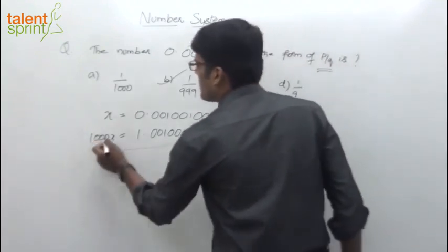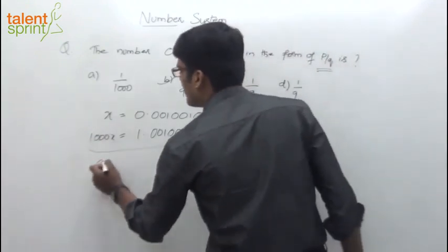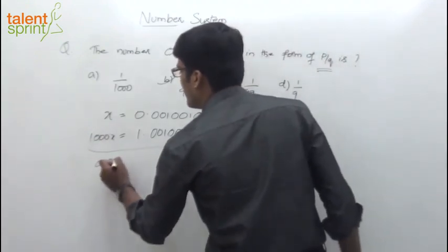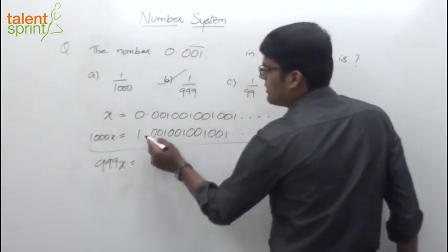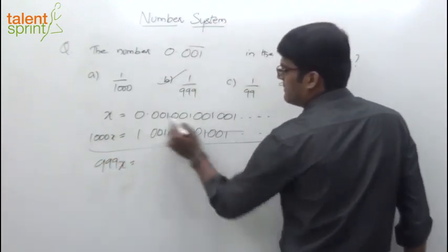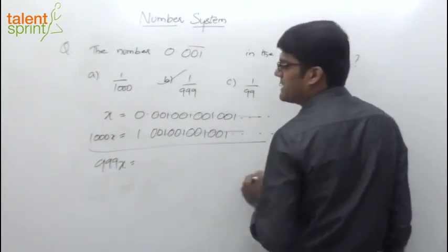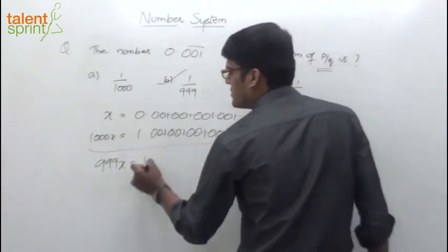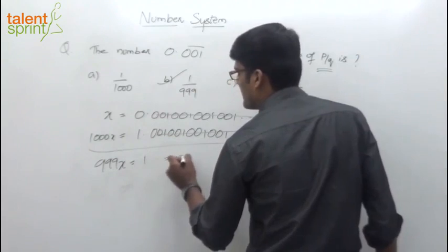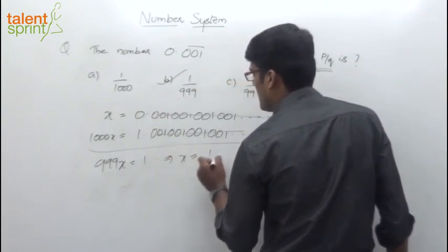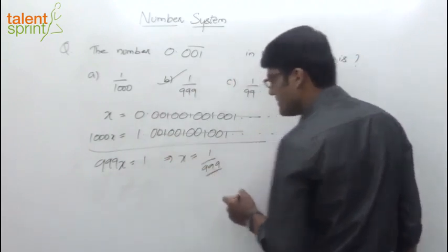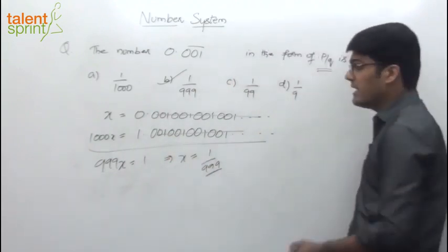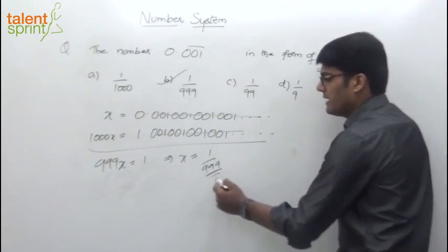Now subtract: 1000x minus x. So 999x equals 1 — the decimal part gets cancelled. 1 minus 0 is 1. This implies x equals 1 by 999. That's the second way of getting the answer: 1 by 999.